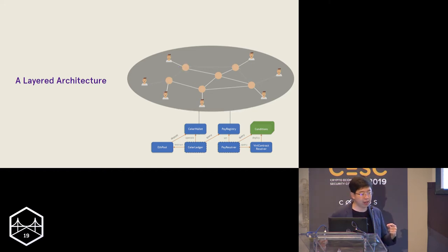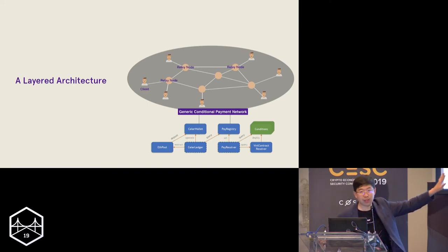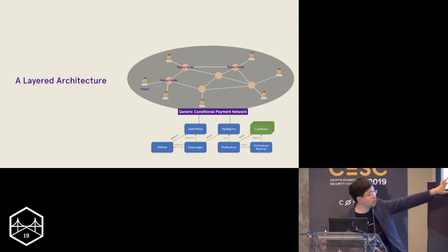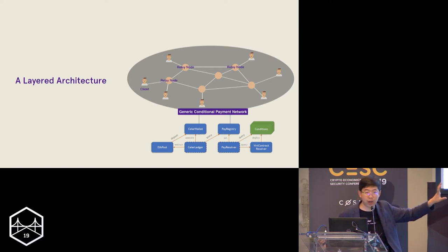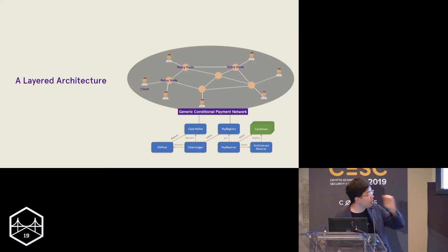The layer two scaling architecture itself is a layered architecture. On the lowest layer there are smart contracts connecting to the underlying blockchain — right now Ethereum, but we can swap those blockchain smart contracts for any blockchain, just like writing drivers for different operating systems. On top of that smart contract layer, we have the generic payment channel network.